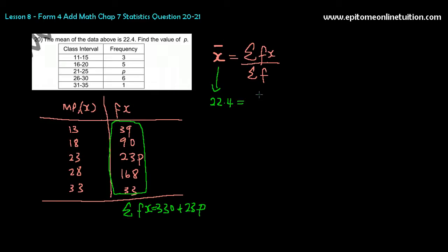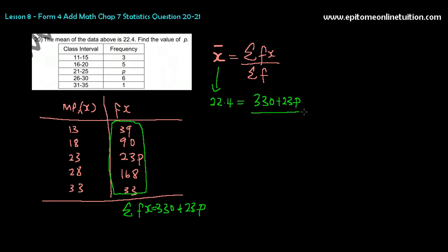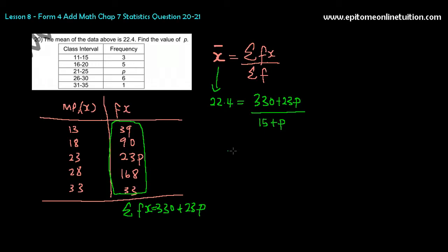So form your equation because that's how you find your unknown. Sigma fx or sum of fx is 330 plus 23p divided by what's the total frequency? You add all of these up and you get your answer in terms of p, that's 15 plus p.